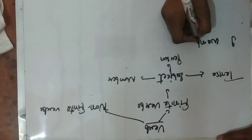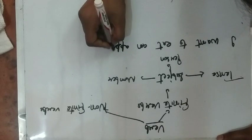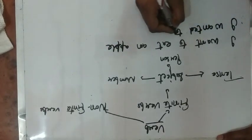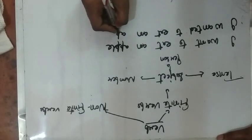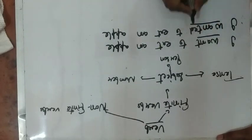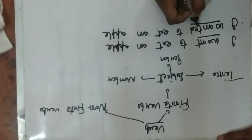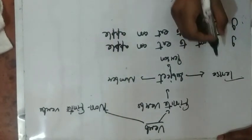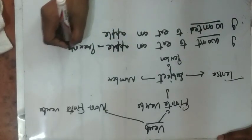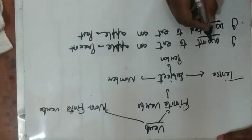I want to eat an apple. I wanted to eat an apple. Here, students, look at 'want' and 'wanted'. These two verbs are finite verbs because these verbs changed according to tense. In the first sentence it is present tense, and in the second it is past tense. So the finite verb changed according to tense.